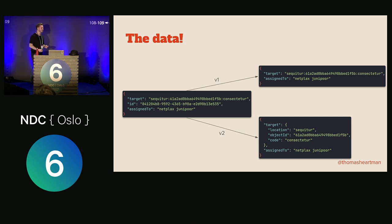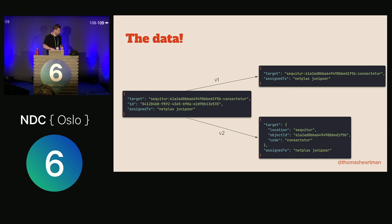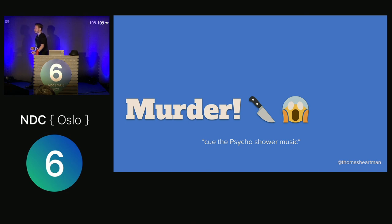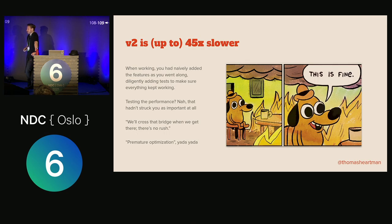You think, 'That's fairly simple, we can do that pretty quickly.' You sit down, knock something out in about an hour, write some tests, don't think too much about it. And then you hear the screech from down the hall, because something really isn't working right. There's been a bit of a murder — it turns out that version two is up to 45 times slower than the first implementation.